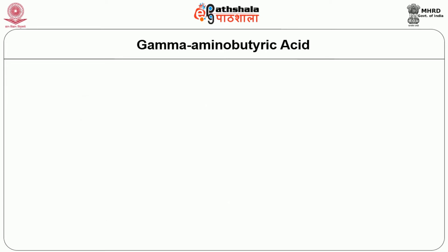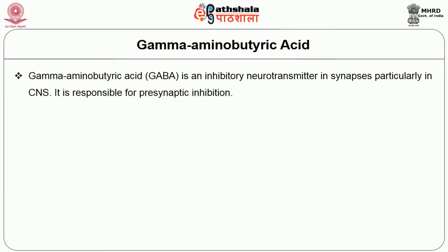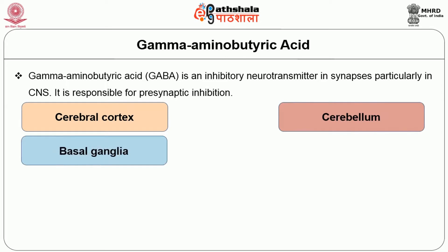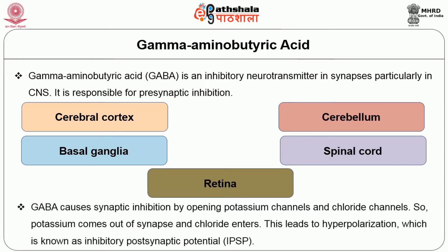Now let us see about gamma-aminobutyric acid, GABA. It is an inhibitory neurotransmitter at synapses, particularly in the CNS. It is responsible for presynaptic inhibition and is secreted by nerve endings of the cerebral cortex, cerebellum, basal ganglia, spinal cord, and retina. It causes synaptic inhibition by opening potassium channels and chloride channels — potassium exits the synapse and chloride enters, leading to hyperpolarization known as inhibitory post-synaptic potential (IPSP).